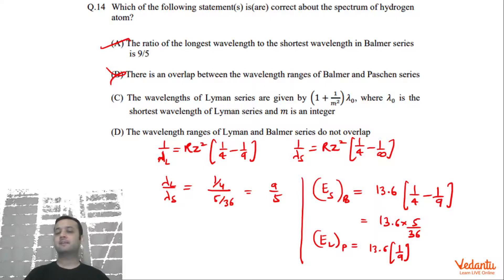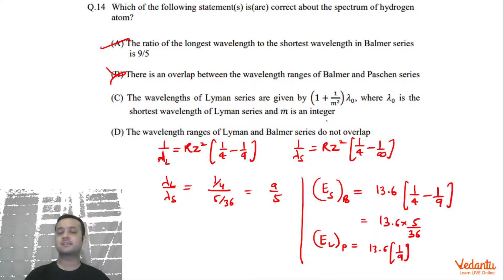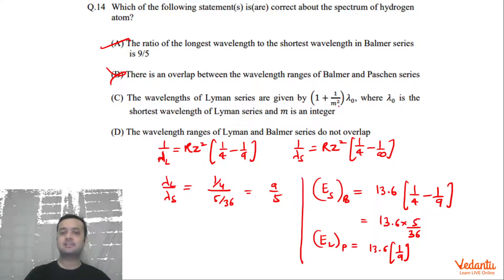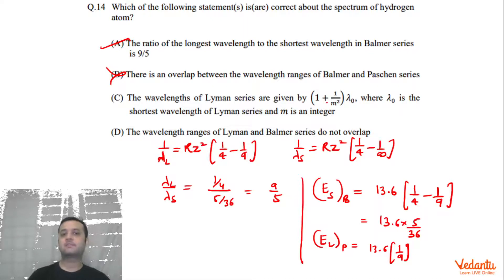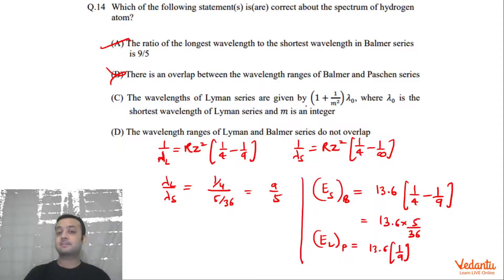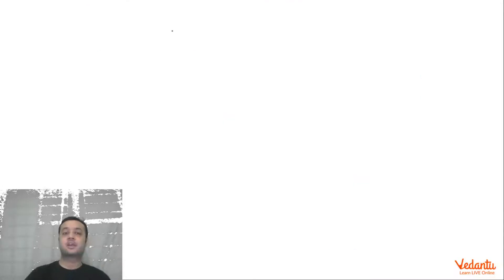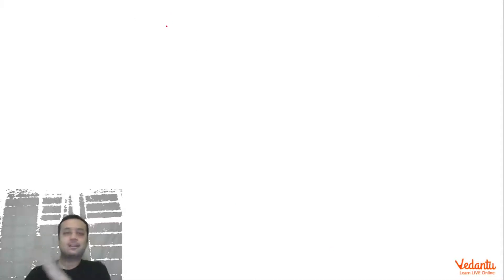Option C states that the wavelengths of the Lyman series are given by λ = λ₀ × (1 + 1/m²), where λ₀ is the shortest wavelength of the Lyman series and m is an integer. This was actually an interesting option. Let's check what the Lyman series wavelength formula looks like. For the Lyman series, the transition happens from general n to 1.